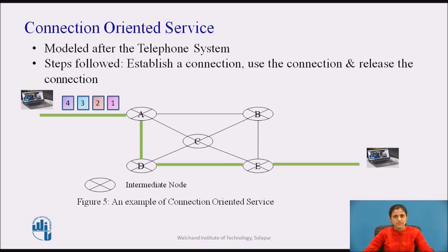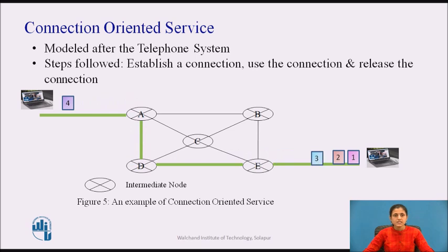Connection-oriented service is modeled after the telephone system. To talk to someone, we pick up the phone, dial the number, talk, and then hang up. Similarly, to use a connection-oriented network service, the service user first establishes a connection, uses the connection, and then releases the connection. The essential aspect of a connection is that it acts like a tube — the sender pushes objects in at one end and the receiver takes them out at the other end, as shown in figure 5. In most cases, the order is preserved so that the bits arrive in the order they were sent.